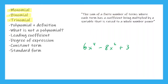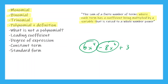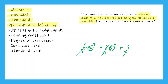This next part of the definition says where each term has a coefficient being multiplied by a variable. Let's see if our example fulfills that. Each term has a coefficient: the coefficient here is six, the coefficient here is negative eight, and the coefficient here is positive three. And each coefficient is being multiplied by a variable. The variable here is x, and here we have x again. Now what's the variable in the third term?